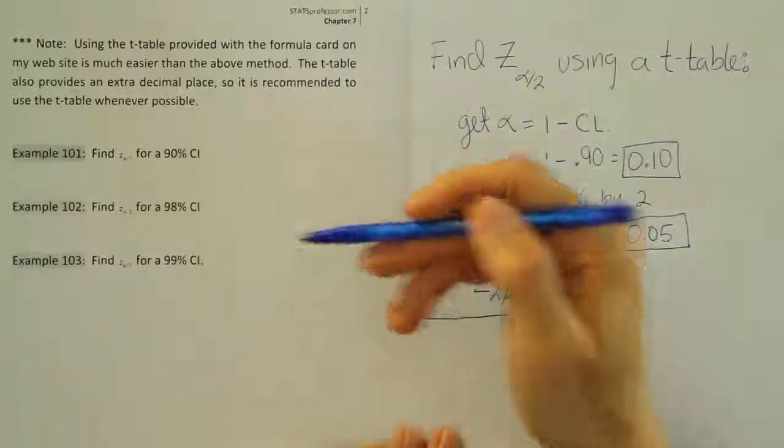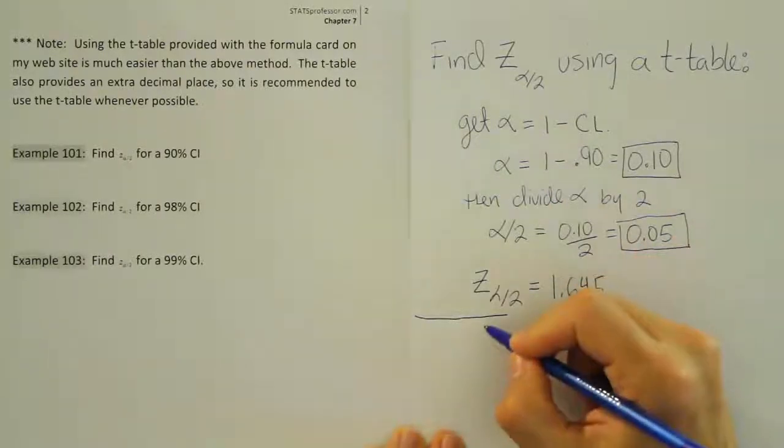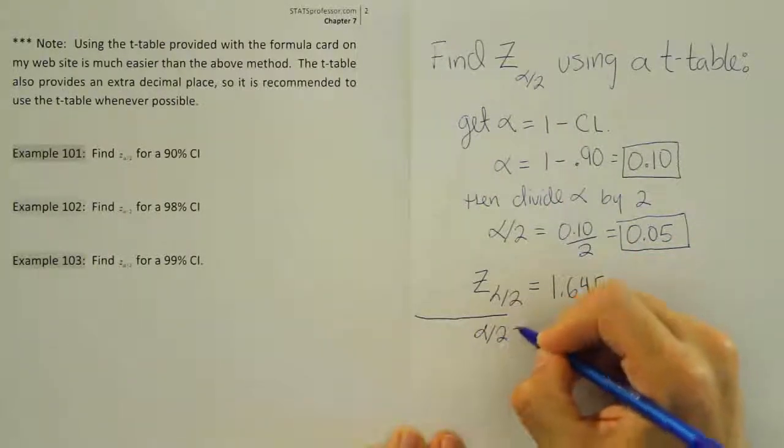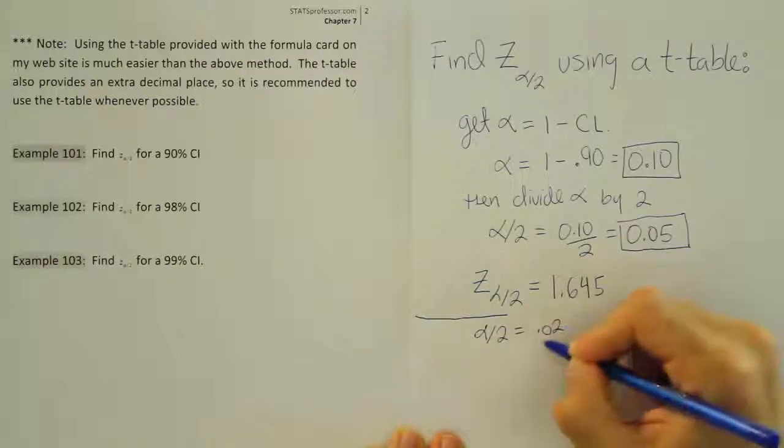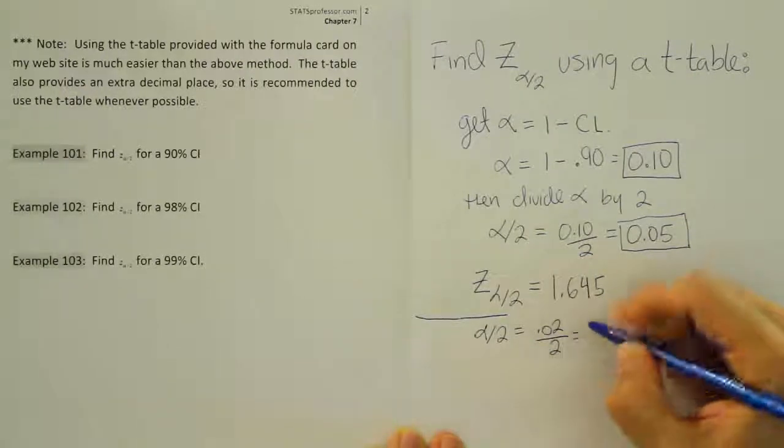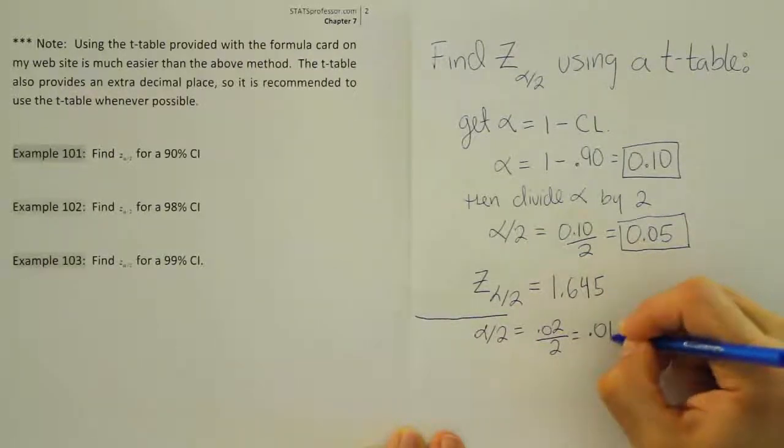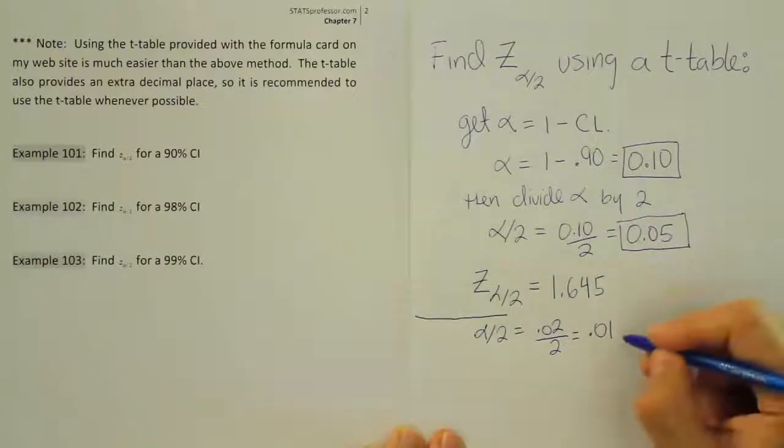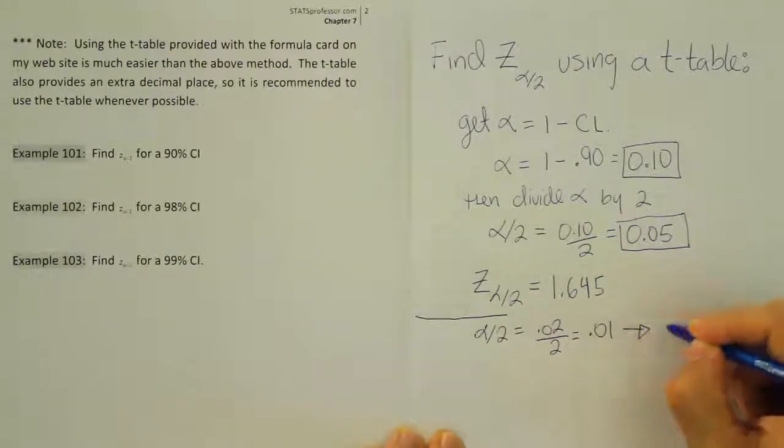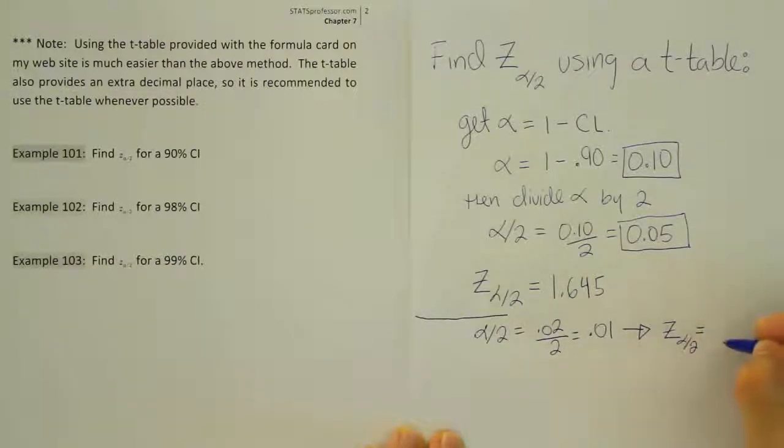So I have 2% as alpha. That must mean that alpha divided by 2 is 0.02, or 2% divided by 2. So that gives you 1% or 0.01. And so it's going to be 0.01 that we look up on our table, and this will lead to our corresponding z alpha divided by 2 value. So let's go to our t-table.